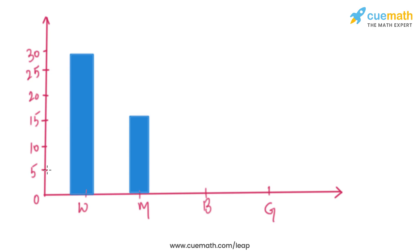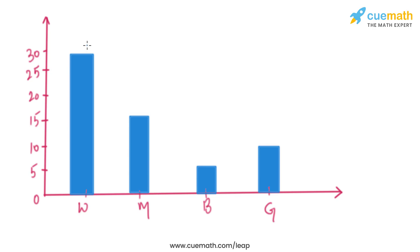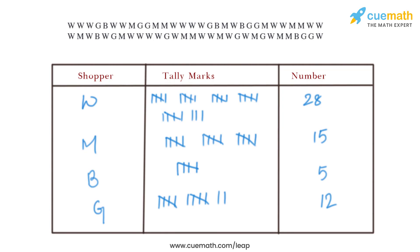For boys, there are 5, and we can see 5 on the y-axis, so we draw the bar there. For girls, there are 12 — which is between 10 and 15, closer to 10 — so we draw the bar accordingly. This completes the bar graph and the frequency distribution table for the given data.